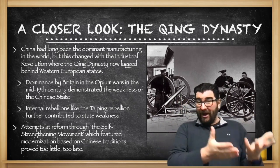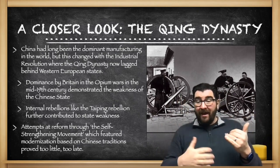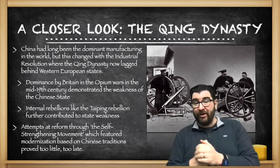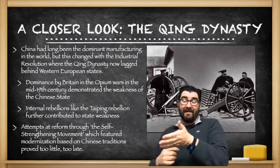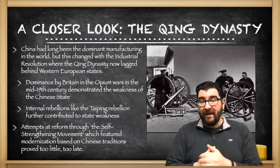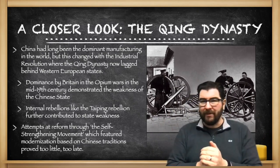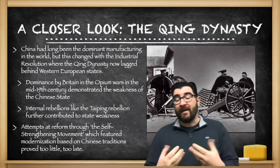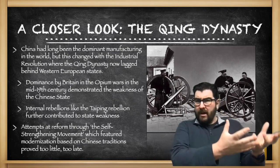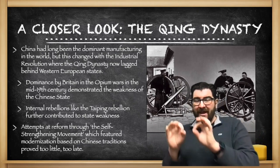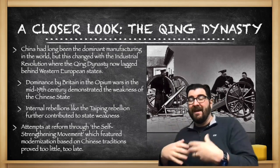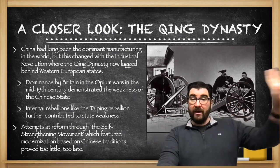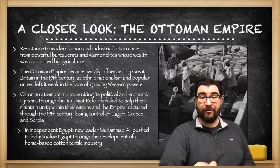In the 19th century, China is going to experience domination by Britain through the Opium Wars of the mid-19th century, which demonstrate the weakness of the Qing state. Internal rebellions like the Taiping Rebellion will further contribute to this state weakness. Attempts at reform come through what's called the self-strengthening movement, featuring a move towards modernization and industrialization still based on Chinese traditions — ultimately proving too little too late to resist the growing powers of Western Europe and Japan.